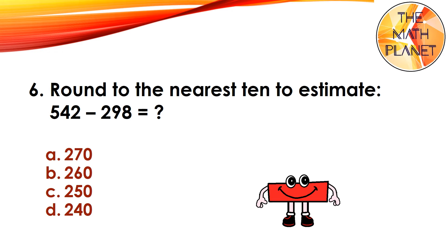Question 6. Round to the nearest ten to estimate 542 minus 298. The correct answer is D because 540 minus 300 equals 240.